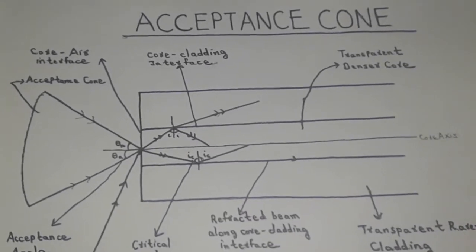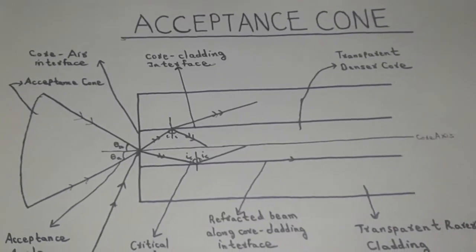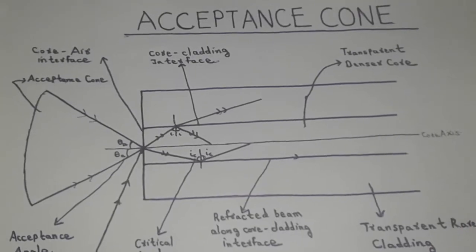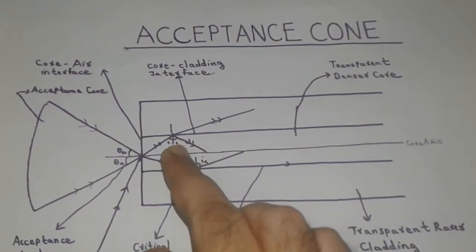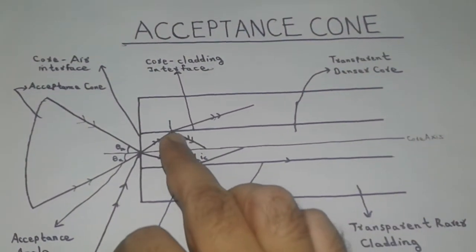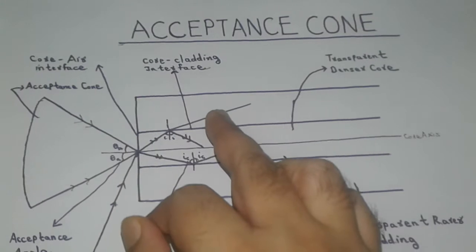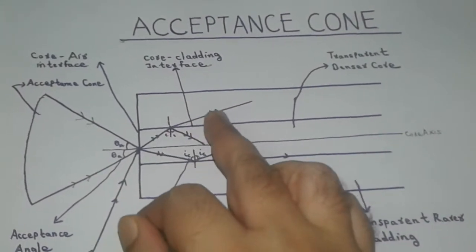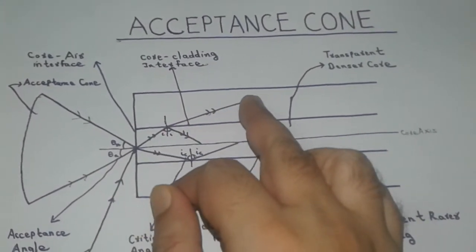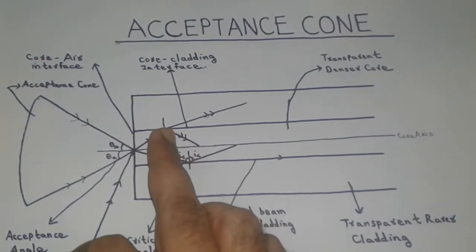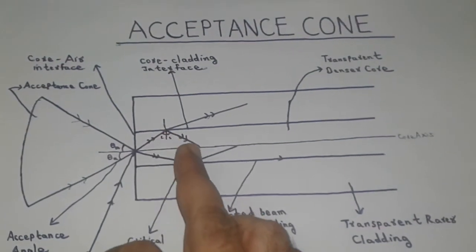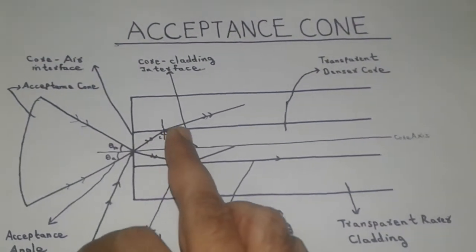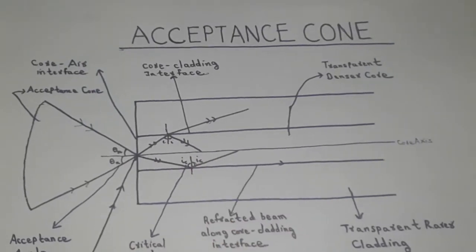Hello students, today we will learn acceptance cone in optical fiber. As we know, the light beam which is refracted into the rarer cladding is responsible for the fiber loss, while the light beam which is reflected into the denser core does not contribute to the fiber loss.